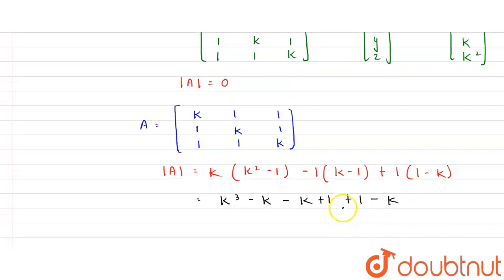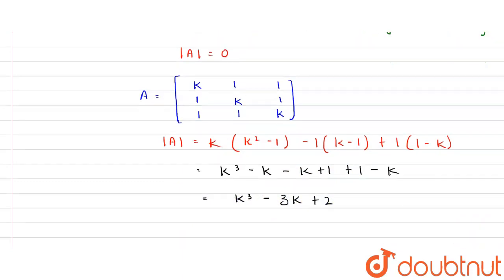On further simplification we get k³ - 3k + 2. Since the determinant of A equals zero, we set k³ - 3k + 2 = 0.